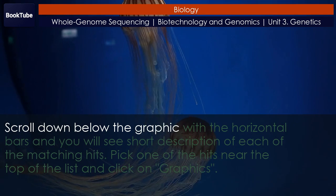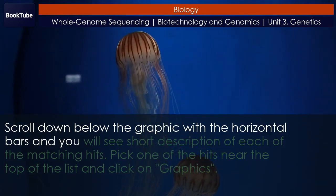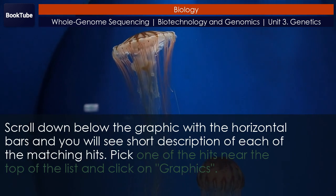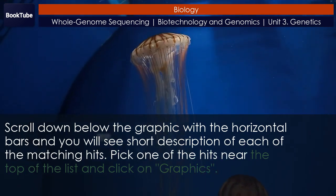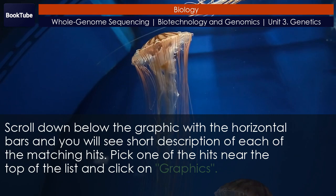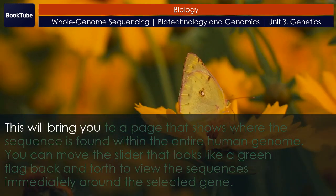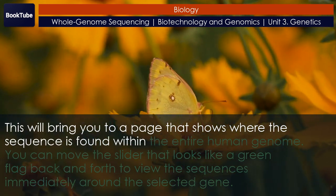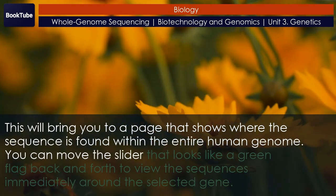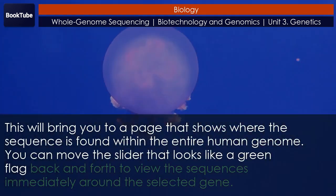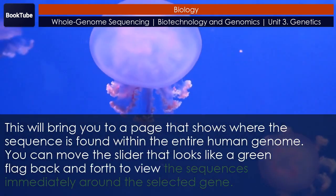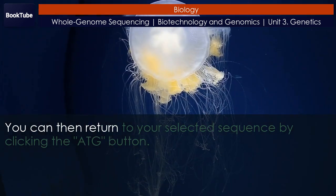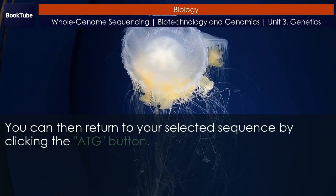Scroll down below the graphic with the horizontal bars and you will see a short description of each of the matching hits. Pick one of the hits near the top of the list and click on Graphics. This will bring you to a page that shows where the sequence is found within the entire human genome. You can move the slider that looks like a green flag back and forth to view the sequences immediately around the selected gene. You can then return to your selected sequence by clicking the ATG button.